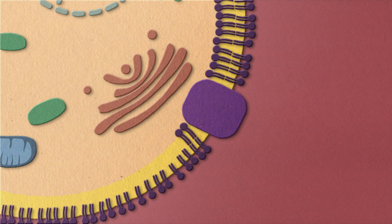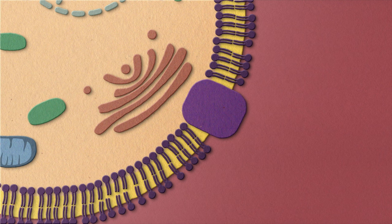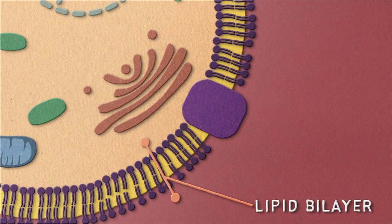Another layer of phospholipids forms facing the opposite way, creating a double-walled membrane officially known as a lipid bilayer.